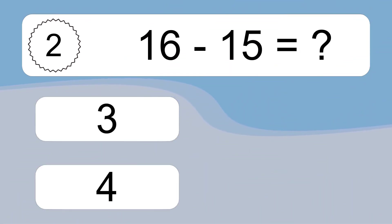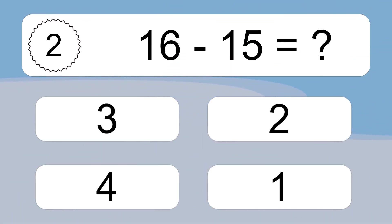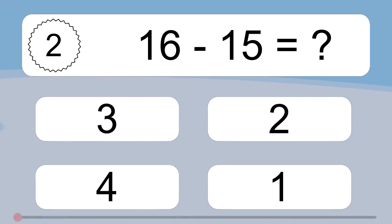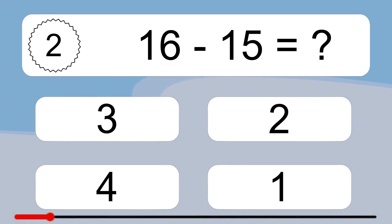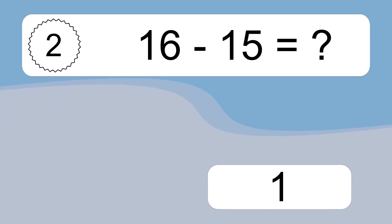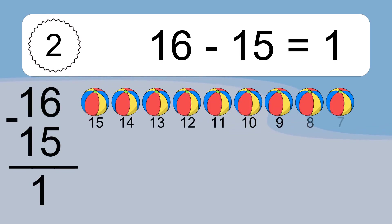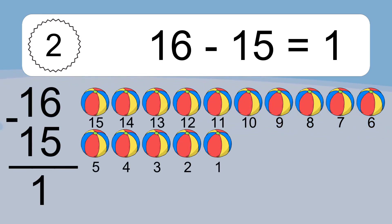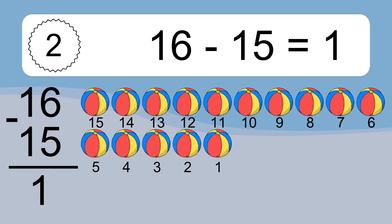16 minus 15 equals what? 16 minus 15 equals 1. Let's count it: 15, 14, 13, 12, 11, 10, 9, 8, 7, 6, 5, 4, 3, 2, 1.